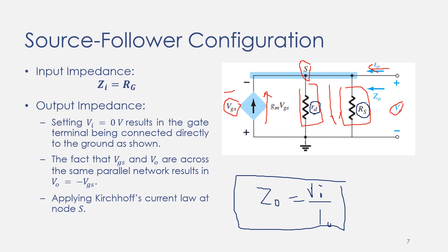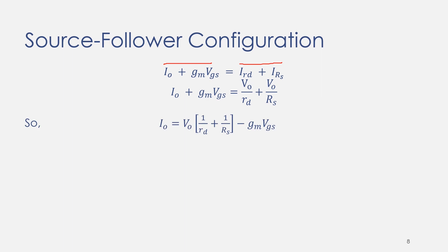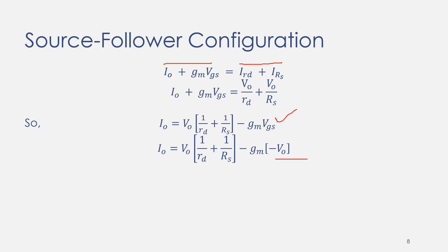We want to find I_output over V_output to get the output impedance. Writing the KCL equation: replacing the current through Rd with V_output/Rd and the current through Rs with V_output/Rs. Since we want Z_output, I_output is on the left side and all other terms are on the right side. Since Vgs equals negative V_output as discussed earlier, we substitute Vgs with negative V_output.